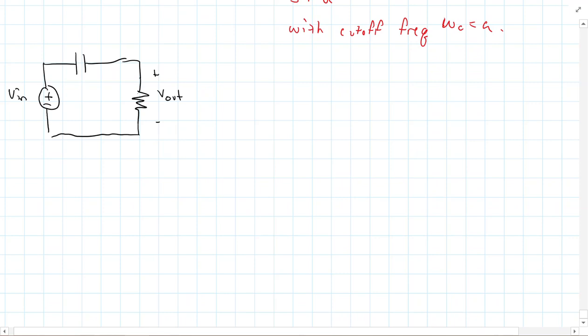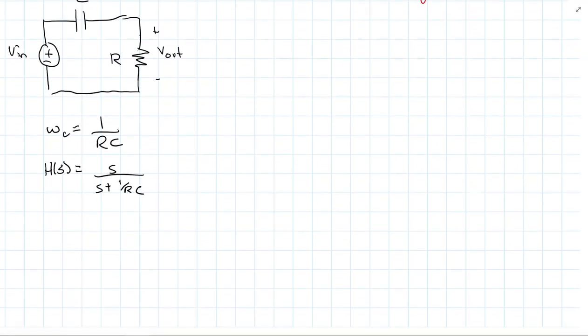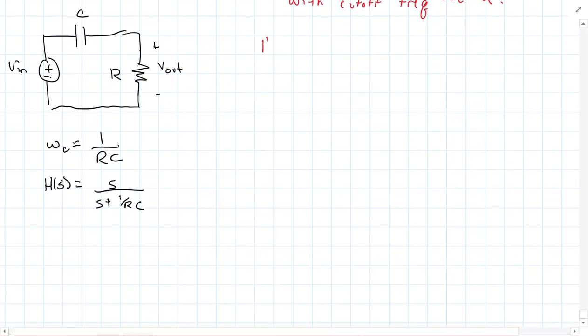The input was the voltage across C. The cutoff frequency we had was 1 over RC, and the transfer function we got was S over S plus 1 over RC. When we ended the video, we made the important comment that if we get a transfer function in the form S over S plus A, that's going to be a high-pass filter. It's first order, and this has a cutoff frequency equaling A.